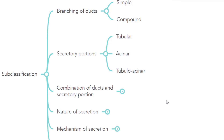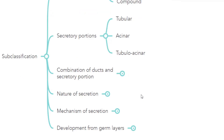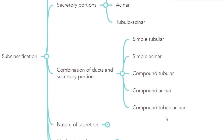In tubular, the secretory cells are arranged in the form of a tube. In the acinar type, the secretory cells are arranged in the form of a round or oval structure. In tubuloacinar, it has both a tubular part and an acinar part. On the combination of ducts and secretory portion together, it is classified into simple tubular, simple acinar, compound tubular, compound acinar, and compound tubuloacinar.